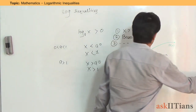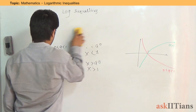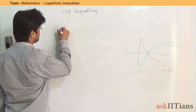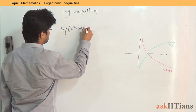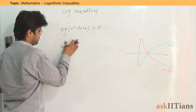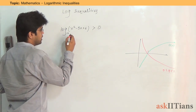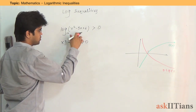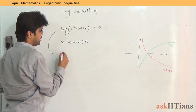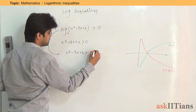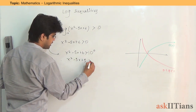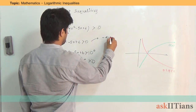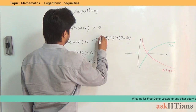For example, let's say we want log of (x² - 5x + 6) to be greater than zero. The base is 10, which is greater than one, so we don't need to worry about a sign change. The first condition is x² - 5x + 6 must be greater than zero. Taking the anti-log, x² - 5x + 6 must also be greater than 1, giving us x² - 5x + 5 greater than zero. The roots of the first condition are 2 and 3, giving the interval (−∞, 2) ∪ (3, ∞).